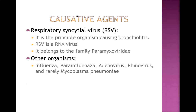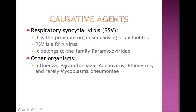Respiratory Syncytial Virus (RSV) is the most important causative agent of bronchiolitis — an RNA virus belonging to the Paramyxoviridae family. Other organisms that can cause bronchiolitis include influenza, parainfluenza, adenovirus, rhinovirus, and very rarely Mycoplasma pneumoniae (a bacterium). Viruses are the main causes, and the most common virus is RSV. Other respiratory viruses like coronavirus are also important.